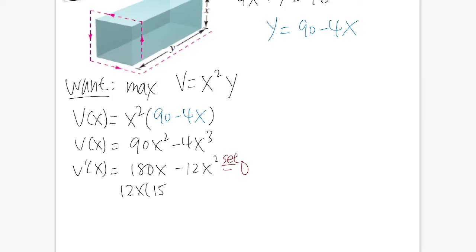We will factor out the 12 and also the x, and we will get 15 minus x, and that will be equal to zero. This means 12x = 0 or 15 - x = 0, so x = 0 or x = 15.